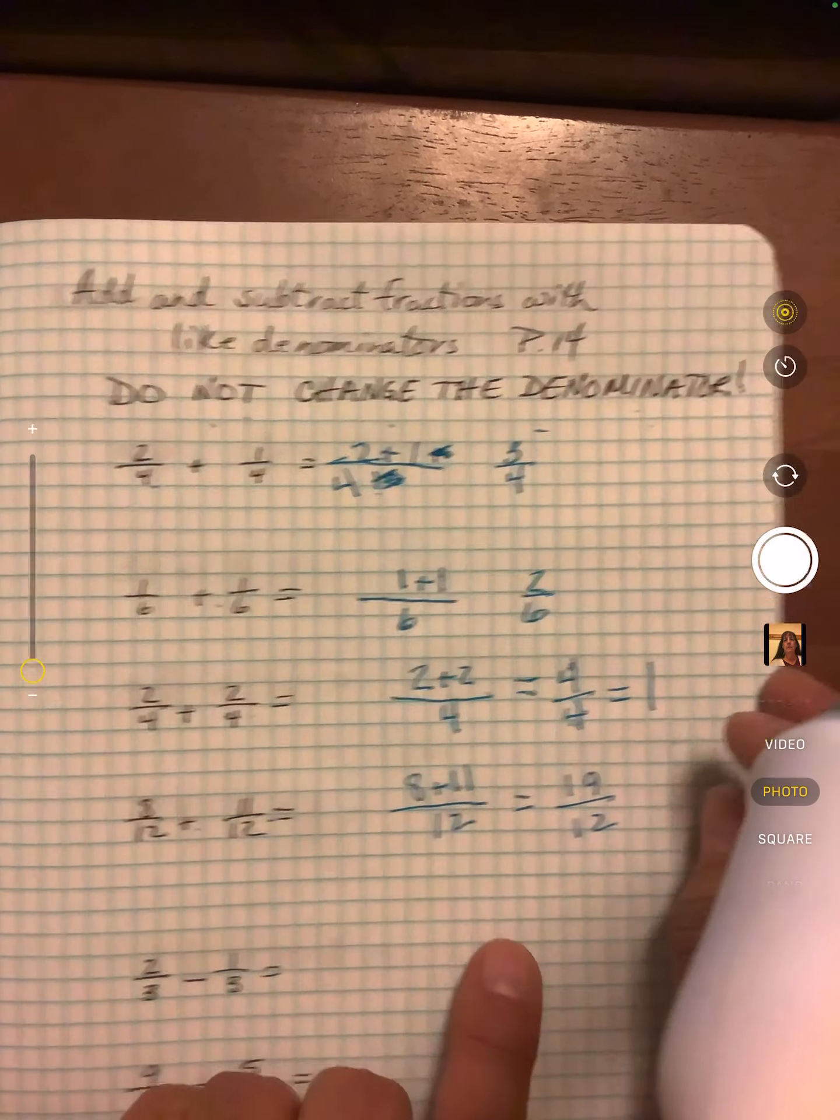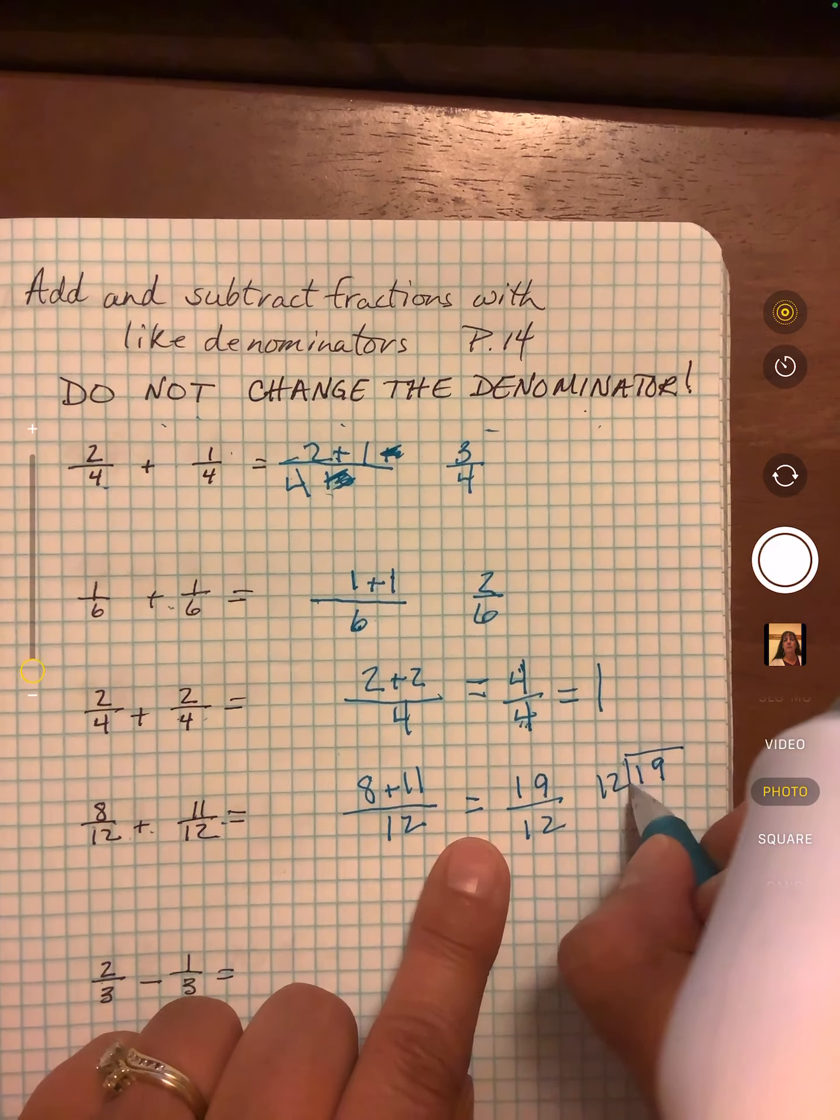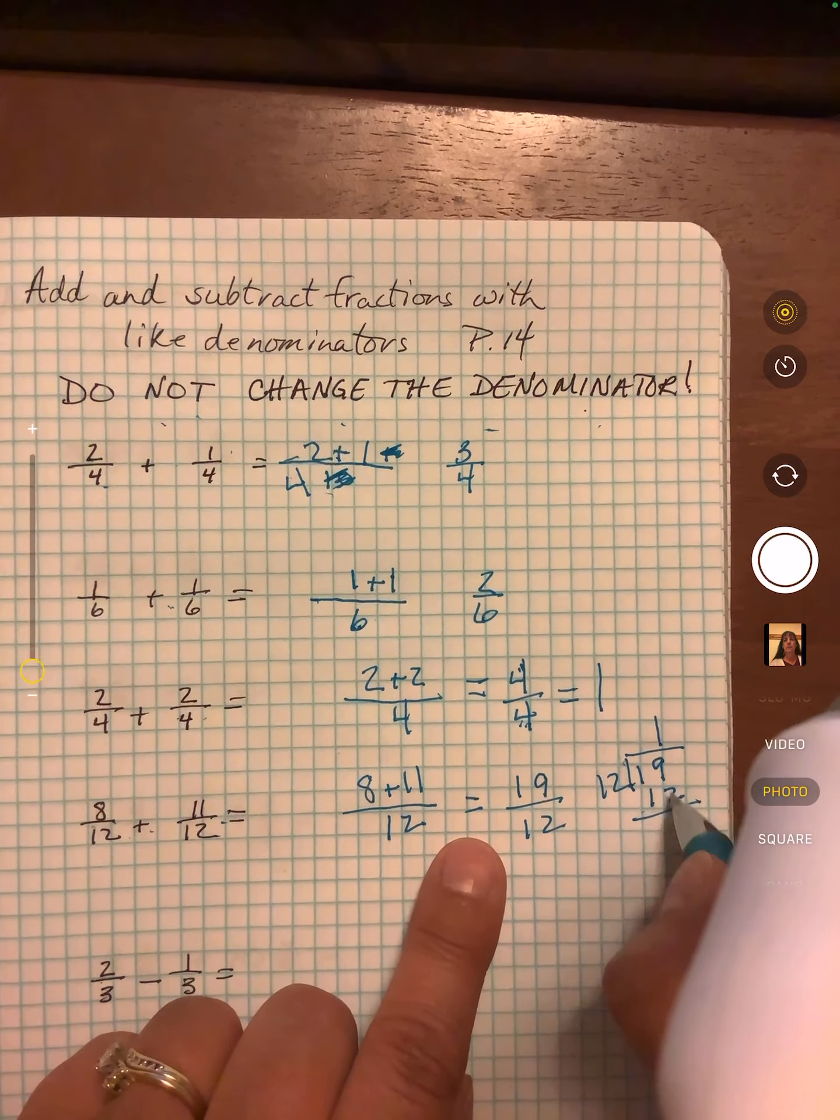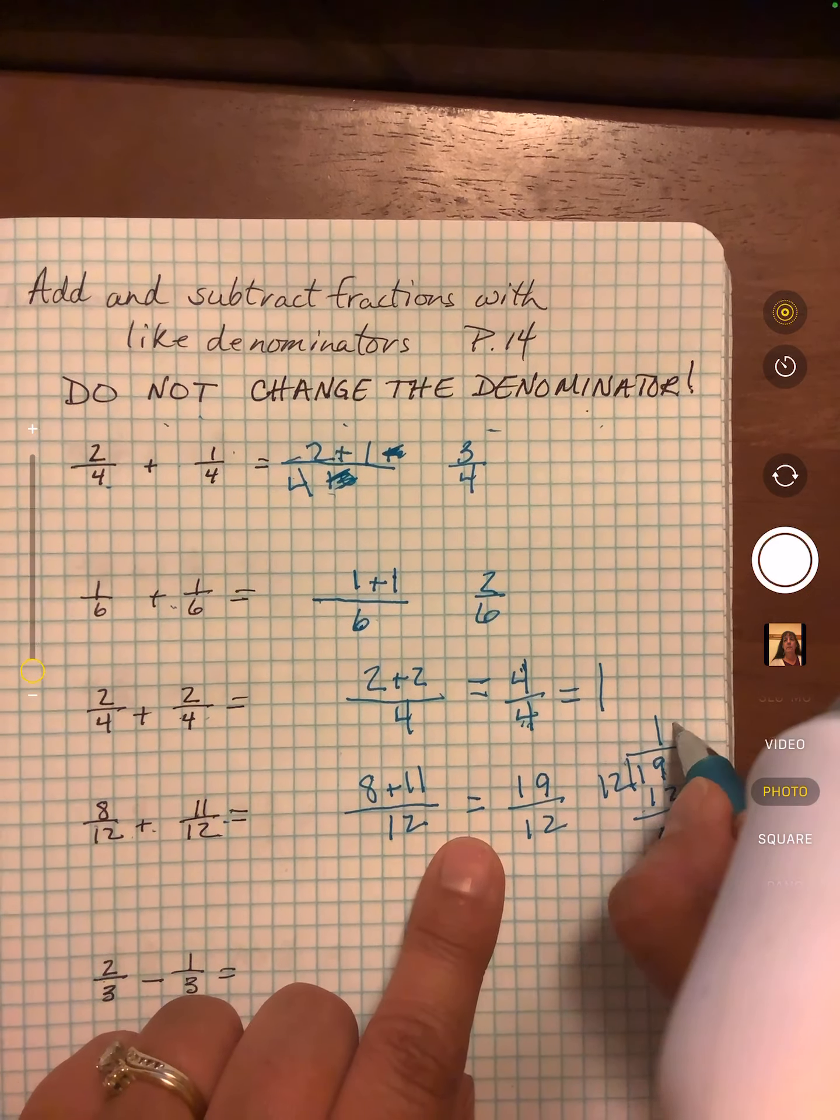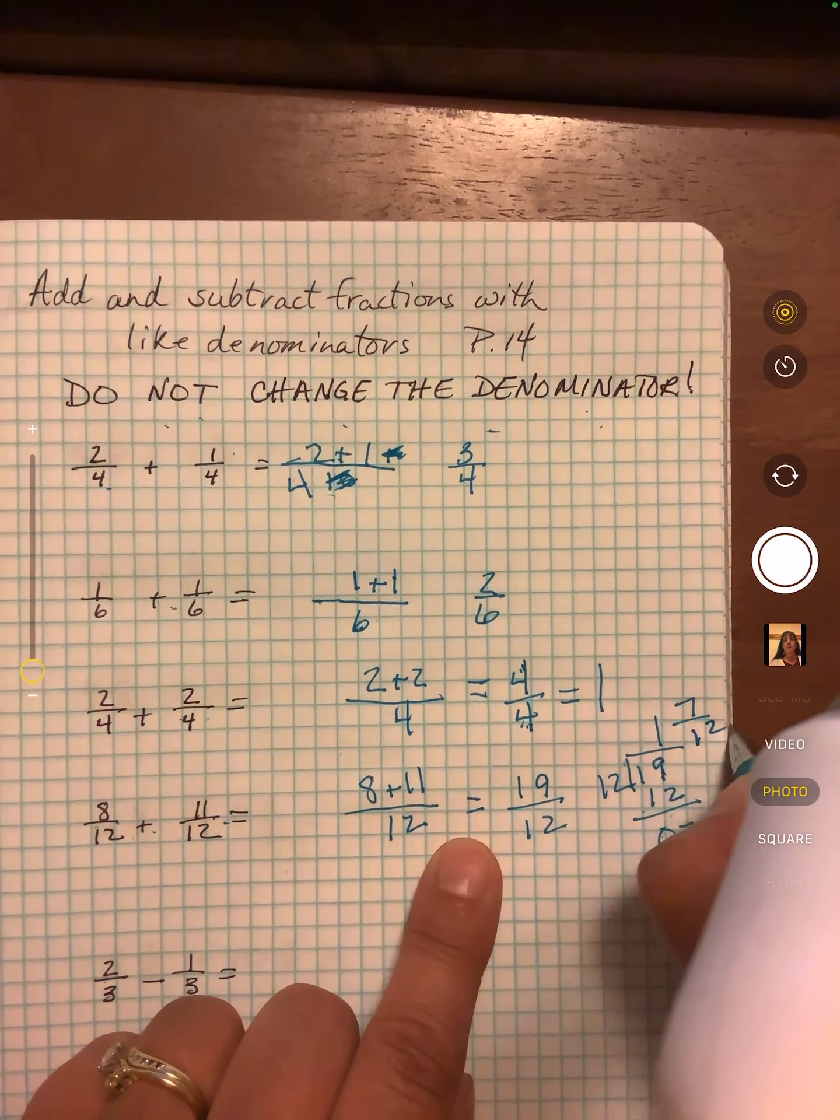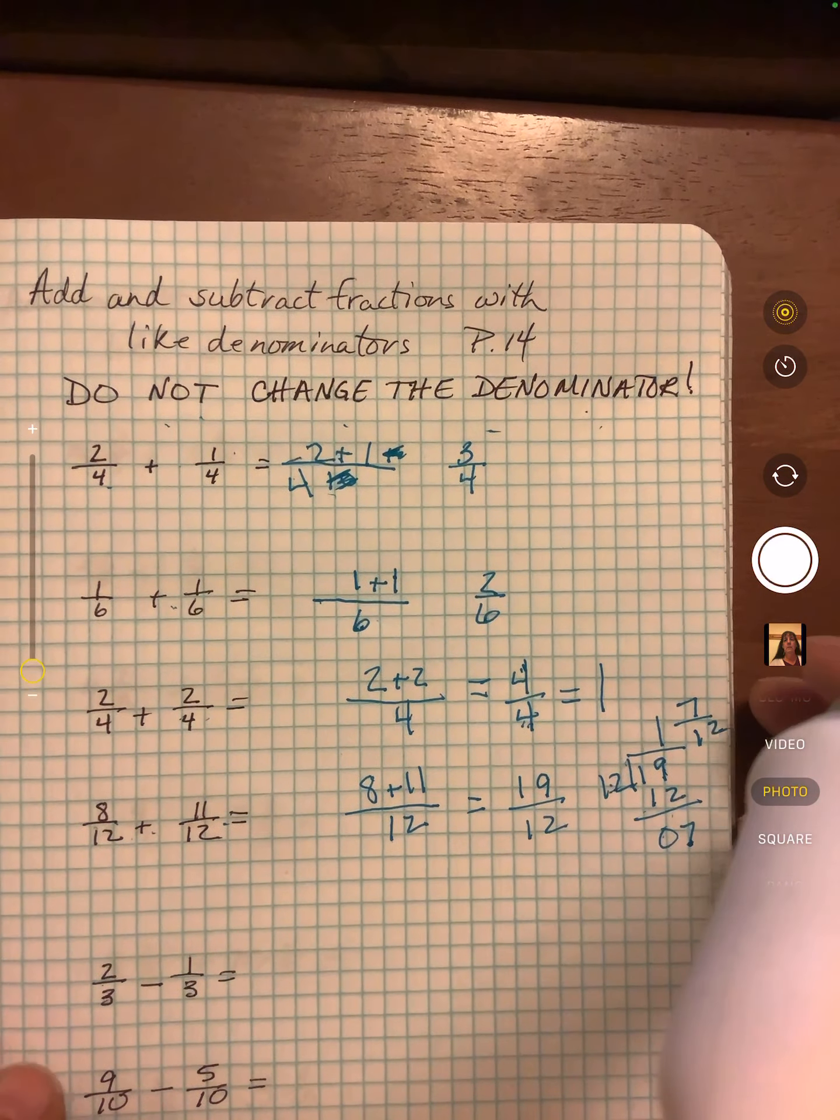Now they will let you put that on there but we could put it in as a mixed fraction by dividing like we did on Friday. Twelve goes into nineteen one time. Nineteen minus twelve is seven. So we take our remainder and put it on top and then the number we're dividing by goes there. So one and seven twelfths is the same as nineteen twelfths.